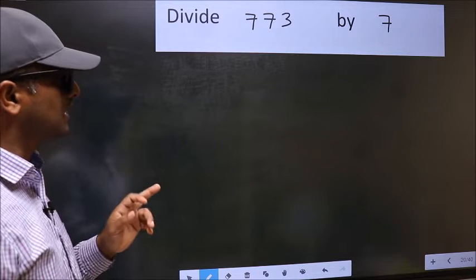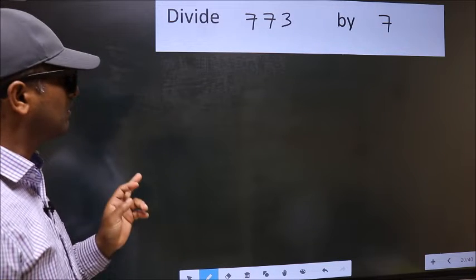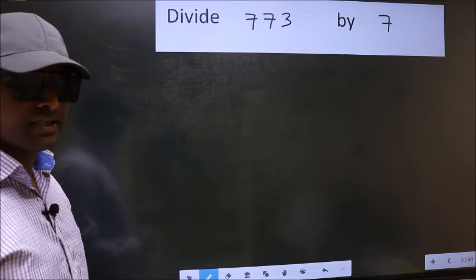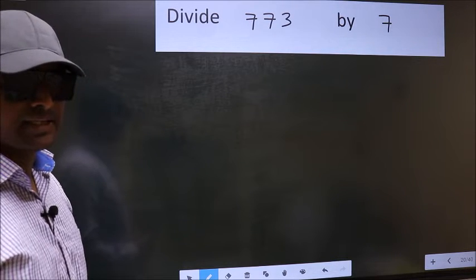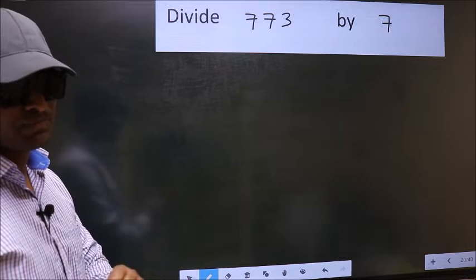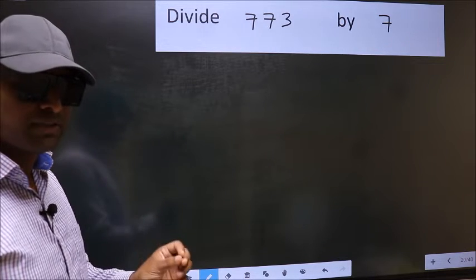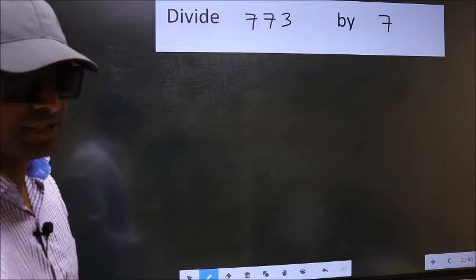Divide 773 by 7. While doing this division, many do this mistake. What is the mistake that they do, I will let you know. But before that, we should frame it in this way.